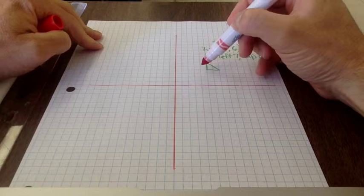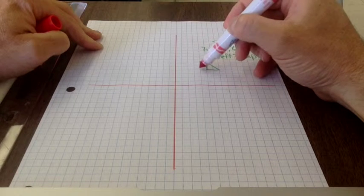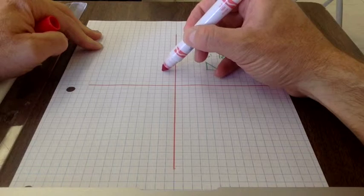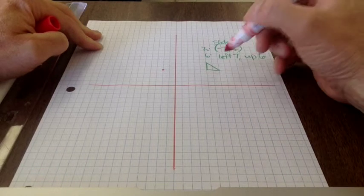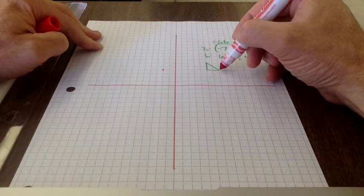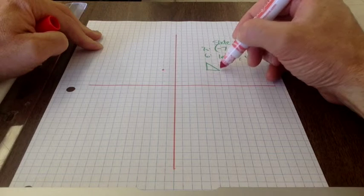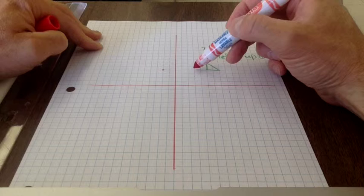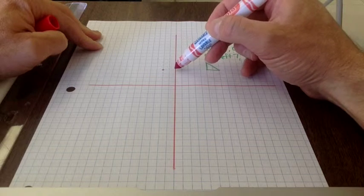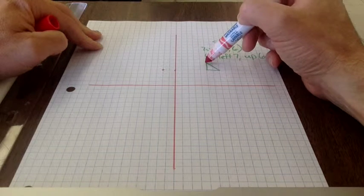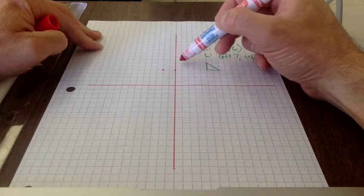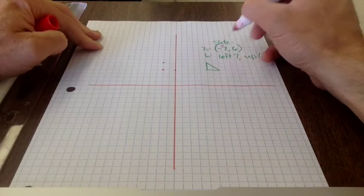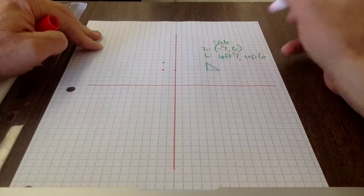We're going to go left seven, so I'm just going to start here and go one, two, three, four, five, six, seven. I'm going to put a dot there. I'm then going to go to my next spot and I'm going to go seven to the left. I'm going to go one, two, three, four, five, six, seven. My third dot, one, two, three, four, five, six, seven. I have now taken care of the minus seven or the left seven.